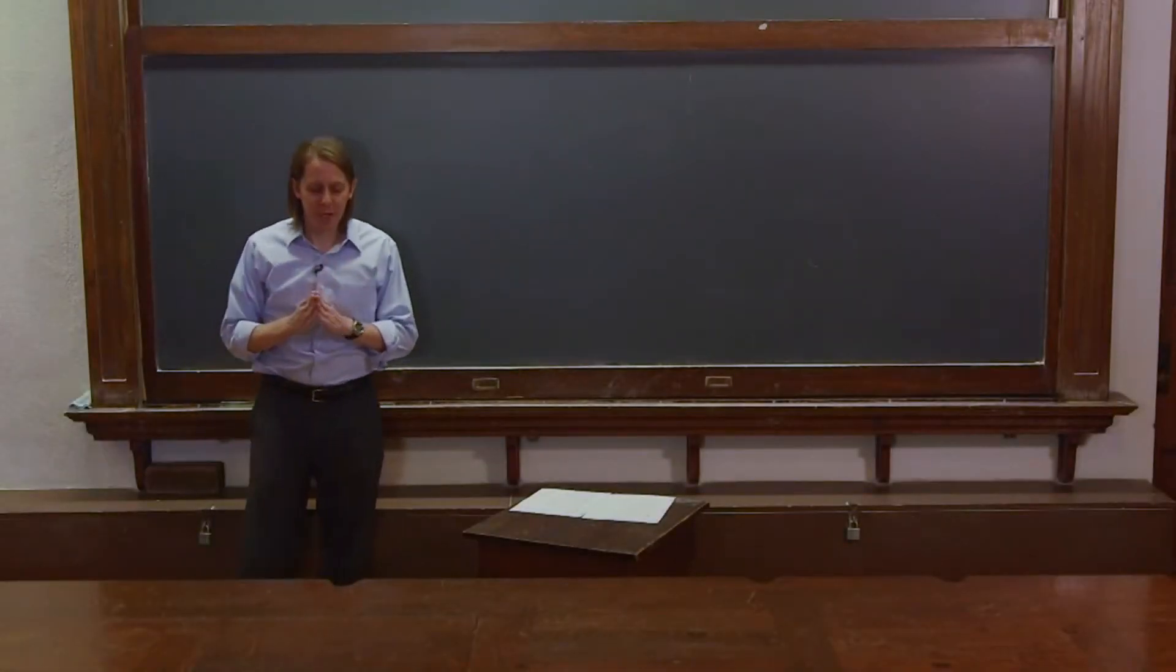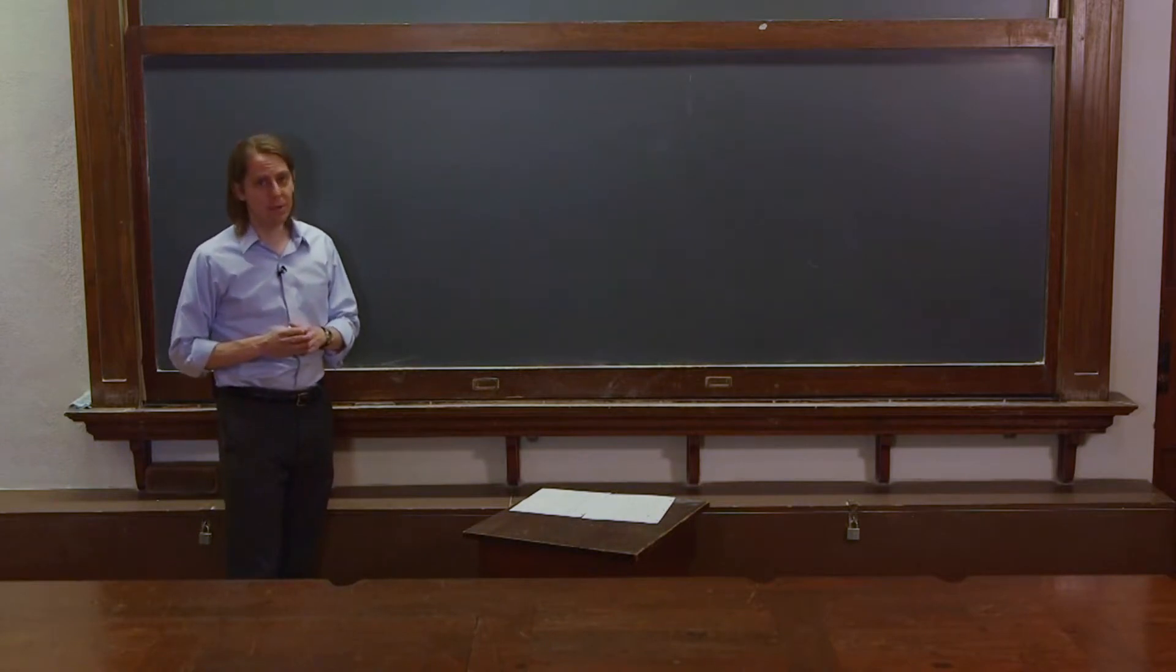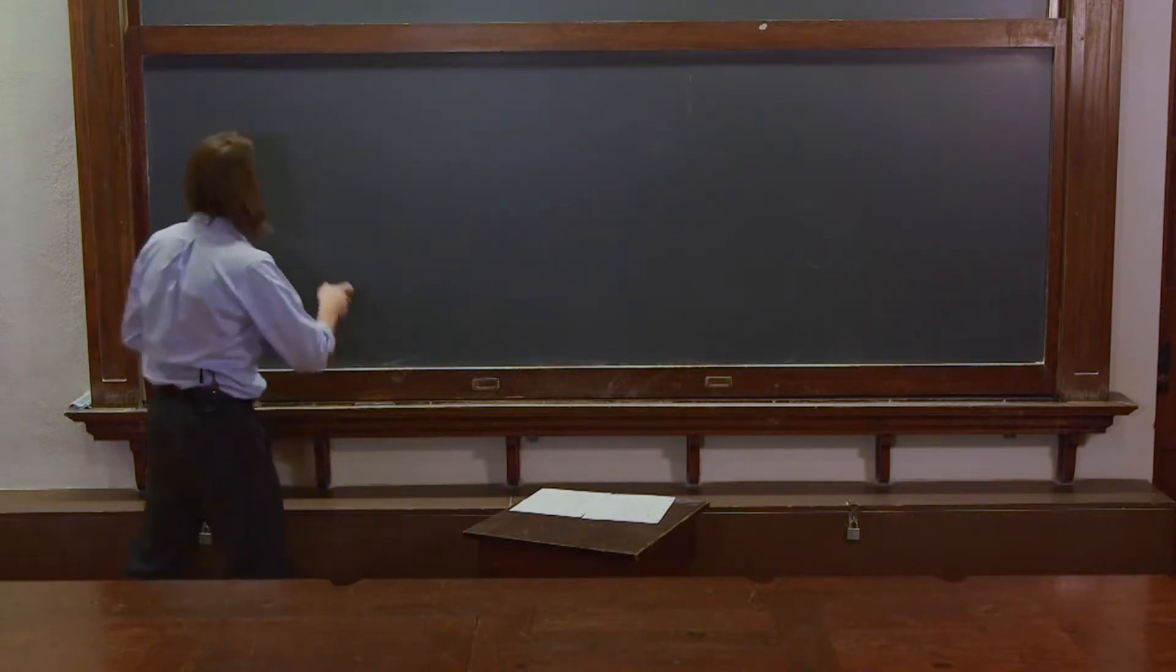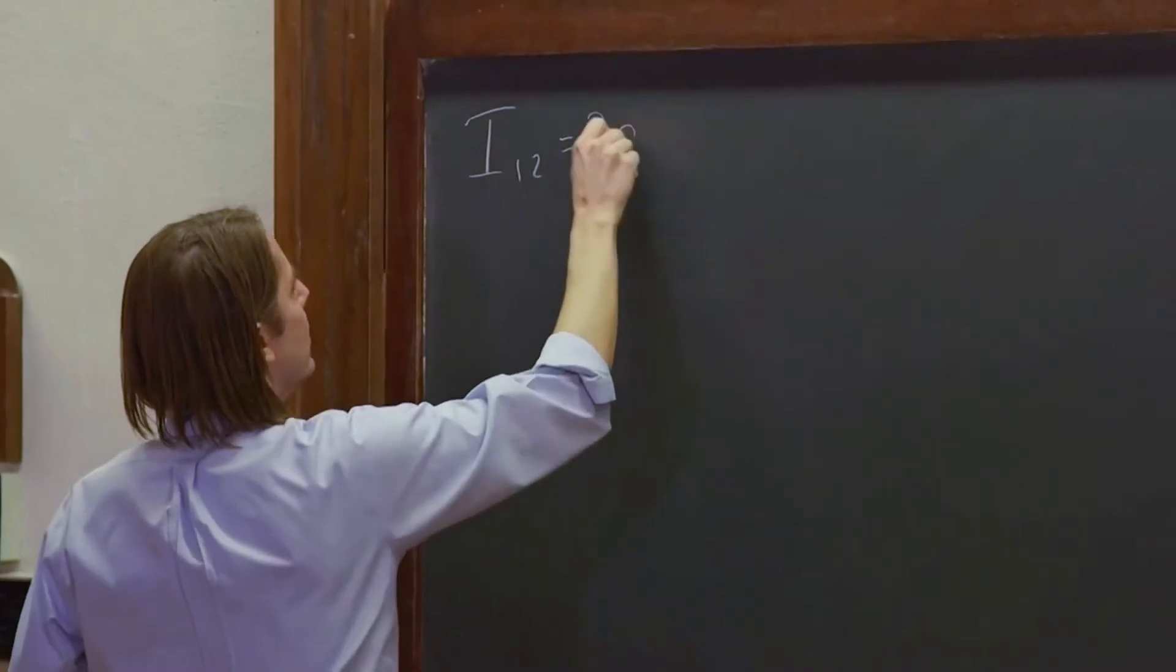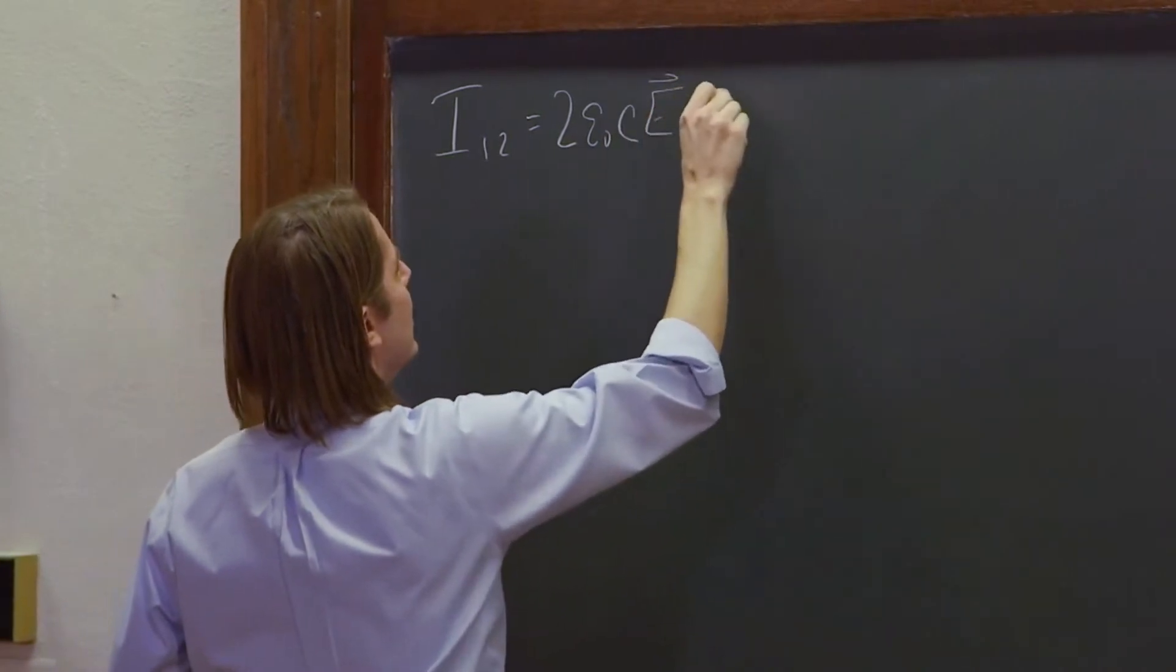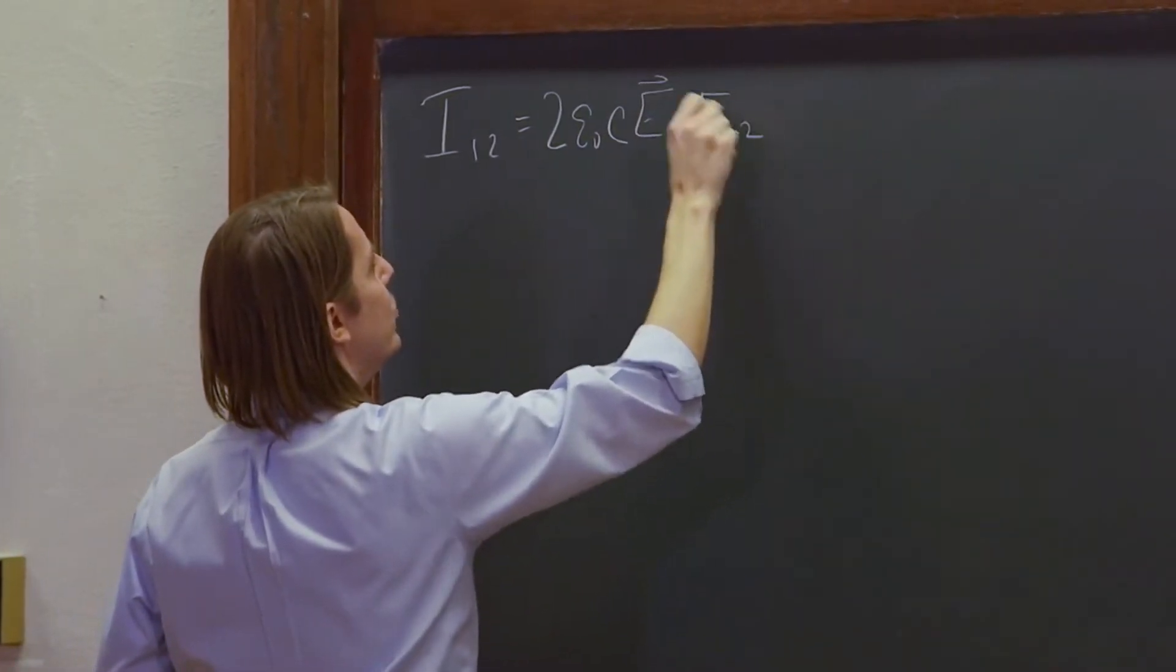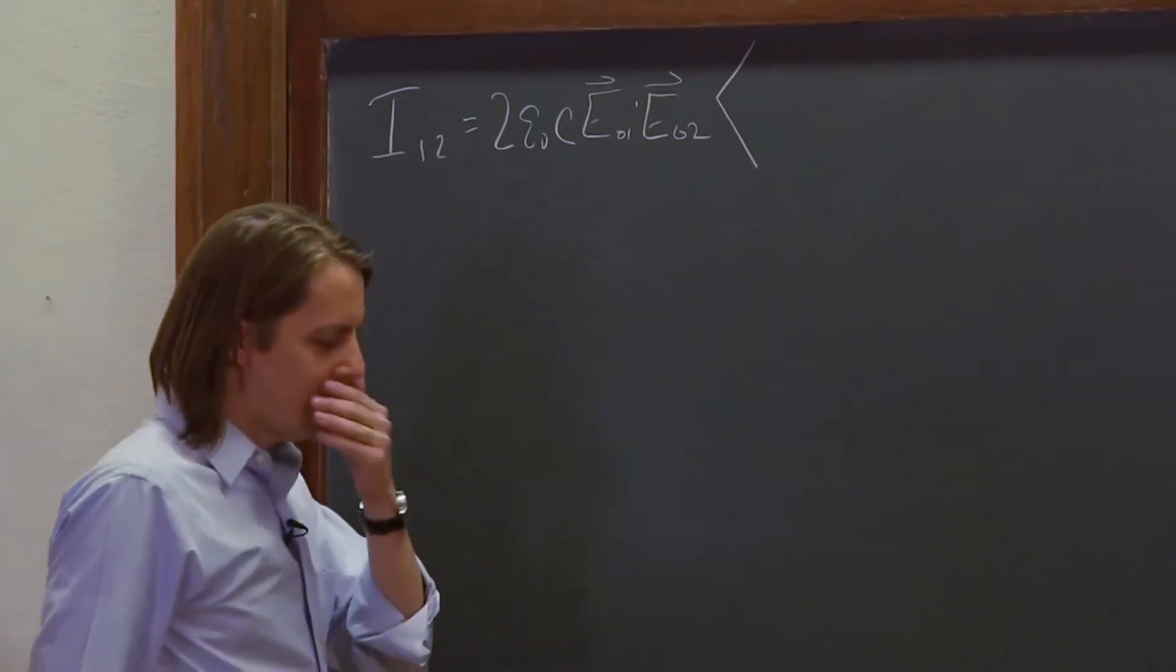I know what you're thinking. Surely you're not going to expand that series of cosines and sines, and I am, and stop calling me Shirley. So I₁₂ is now 2ε₀c E₀₁ dotted with E₀₂ of a giant time average.